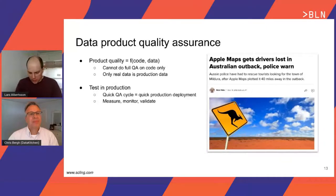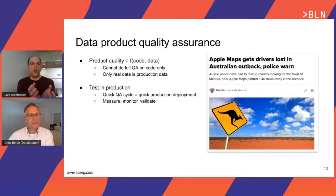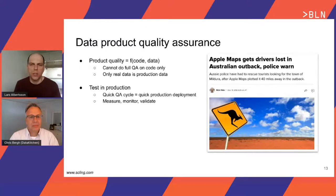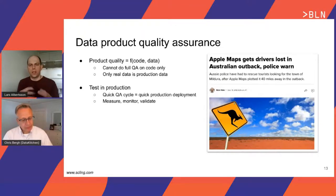For data-driven products, we cannot just look at the code when assessing quality for production — we need to look at both the code and the data. No matter how much we polish the code, we don't know the quality until it reaches real production data. Therefore, we have to test things in production and get feedback right away from real data. The best illustrative example is when Apple launched Apple Maps. Apple are superb at polishing things to perfection, but when the product — heavily dependent on data — hit the real world, the data quality was not good enough, causing some interesting headlines.